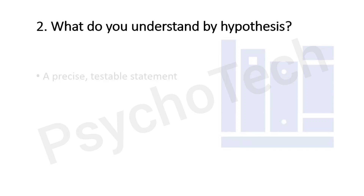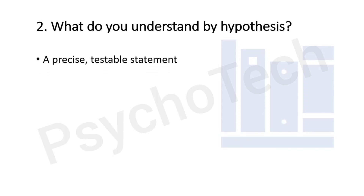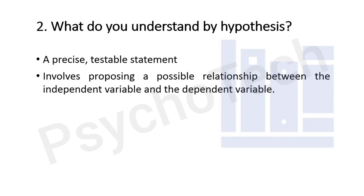Our next question is: what do you understand by hypothesis? A hypothesis is a precise, testable statement of what the researcher predicts will be the outcome of the study. This usually involves proposing a possible relationship between two variables — one being the independent variable and the other the dependent variable. Independent variables are the variables the researcher changes, and dependent variables are those the researcher measures.